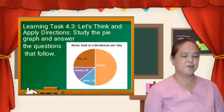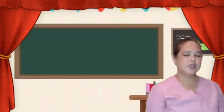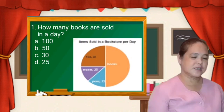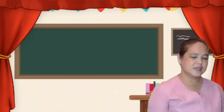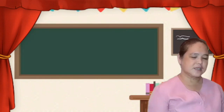For learning task 4.3, let's think and apply. Study the pie graph and answer the questions that follow. Let us answer number 1: how many books are sold in a day? A) 100, B) 50, C) 30, D) 25. To get the answer, you are going to add the number of files, the number of erasers, and the number of pens: 50 plus 25 plus 25 is equal to 100. Since the book represents half of the pie graph, the number of books sold in a day is 100. Then answer number 2, number 3, and number 4 by encircling the letter of the correct answer.